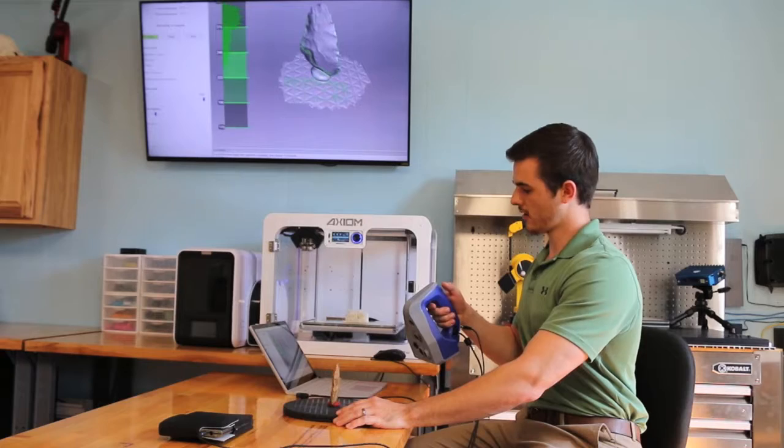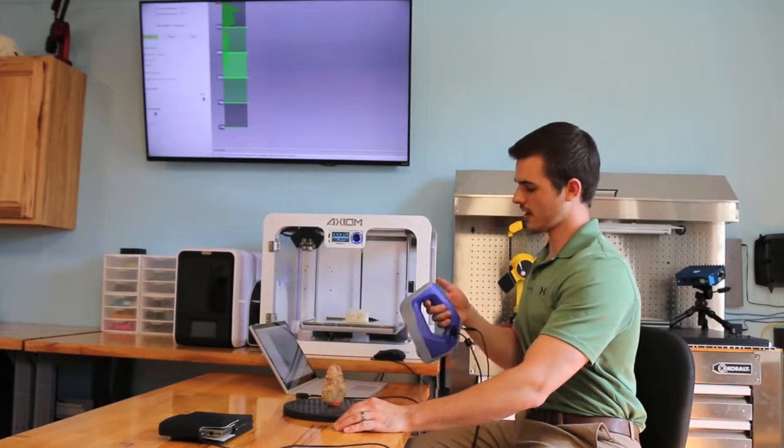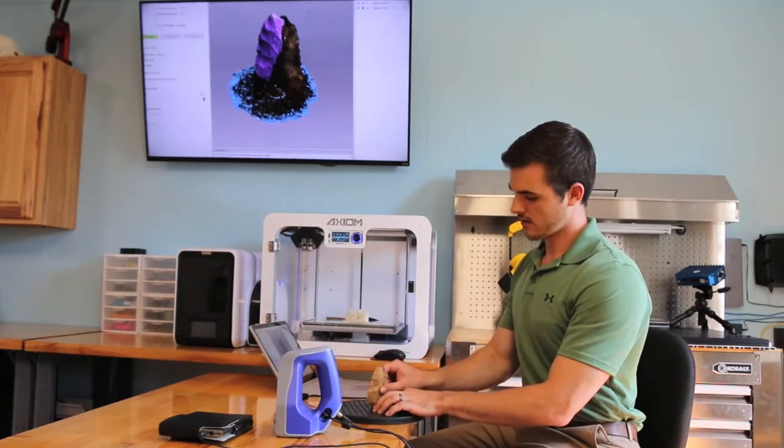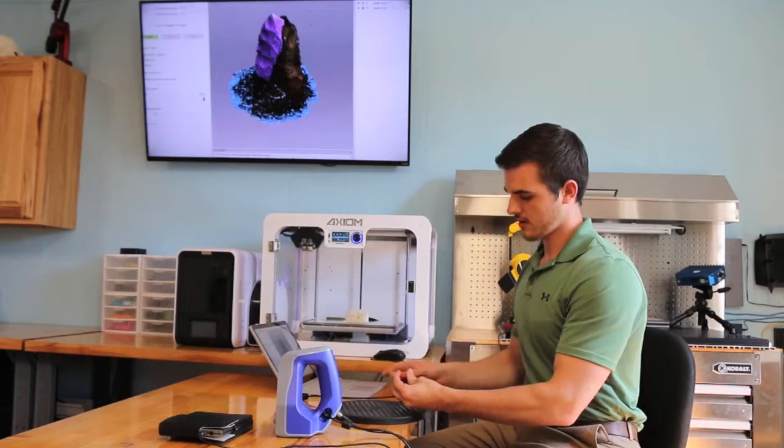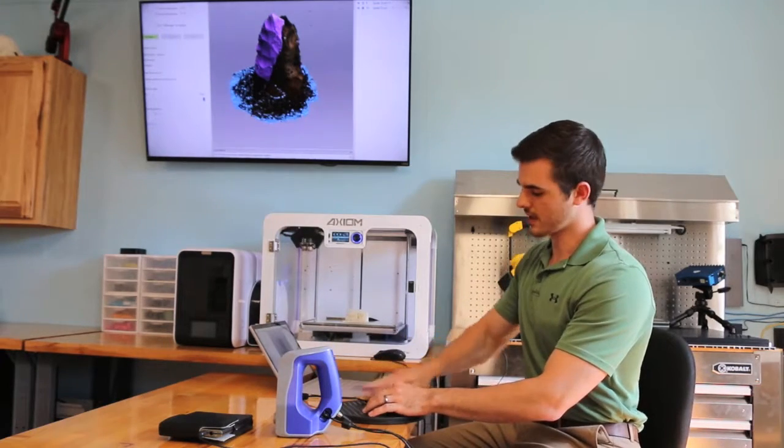Once I've gathered all the information that I need in this particular position, I switch down once to stop scanning, and I will remove the part from the clay and simply flip it upside down.